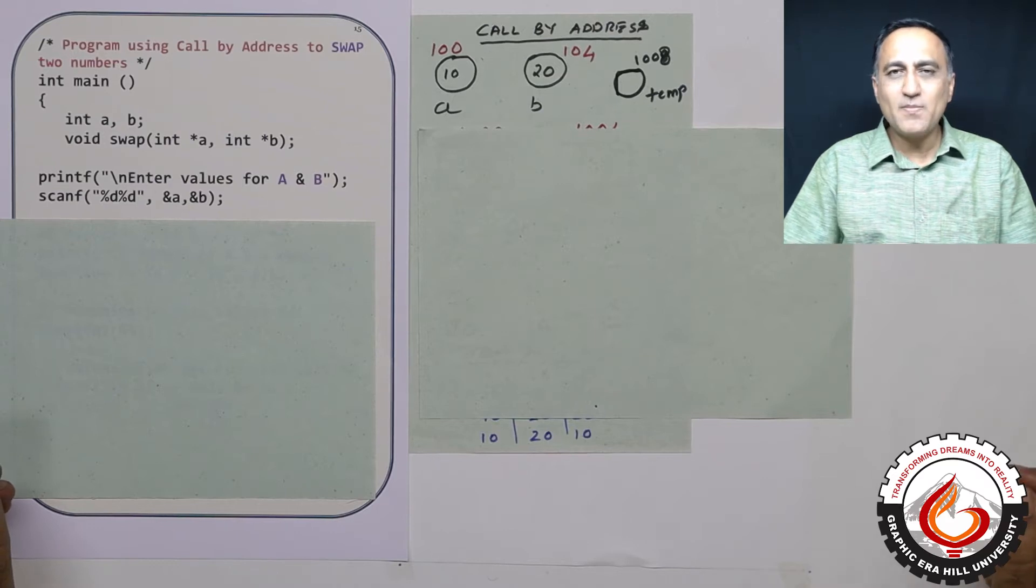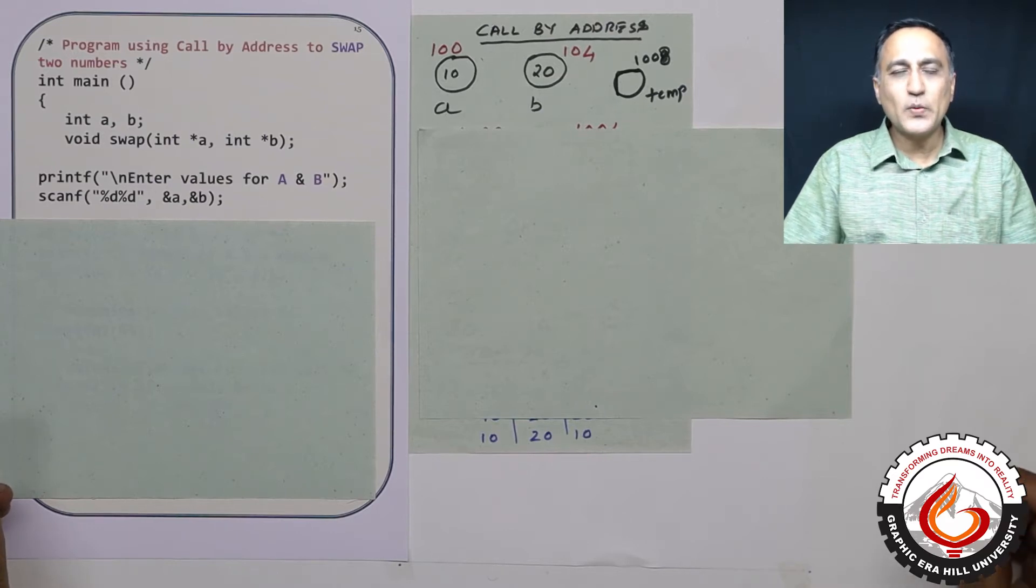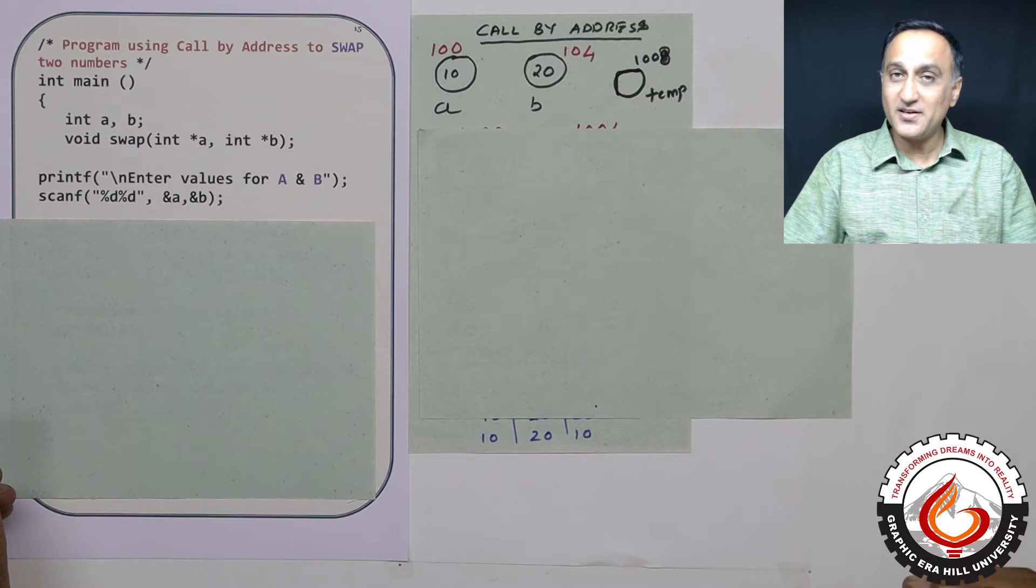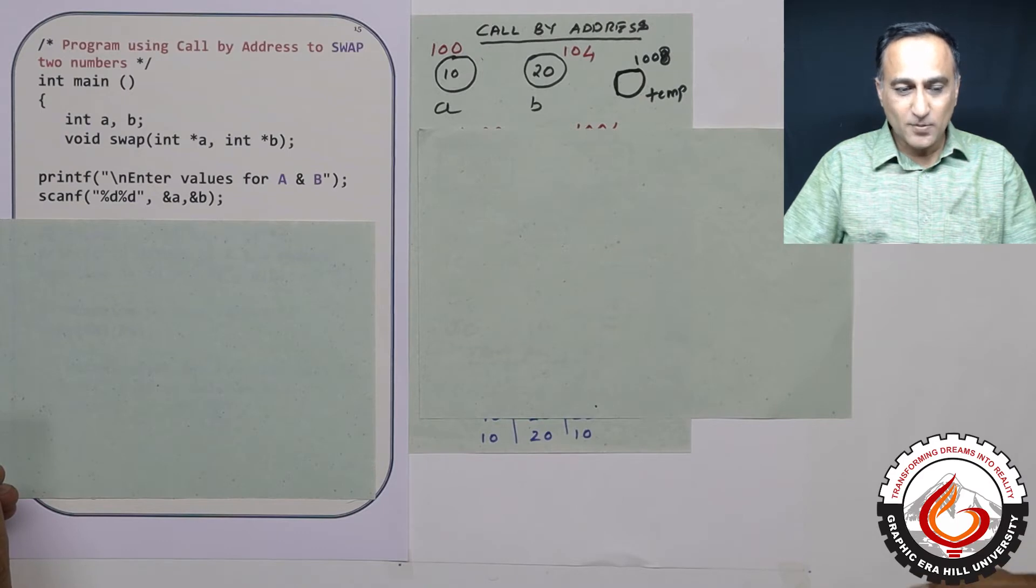In the previous problem, I tried to show you call by value in which whatever you do in the add function did not get affected in the main function. But here it is something different. You will be able to change the values in the main function through this technique called call by address.